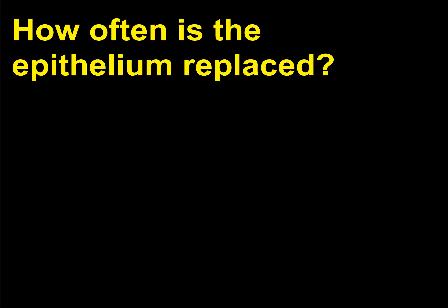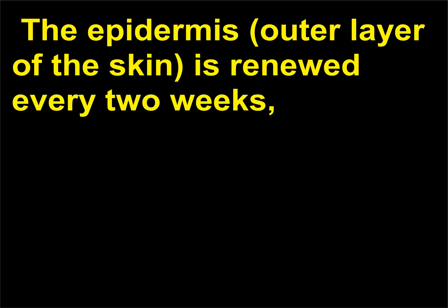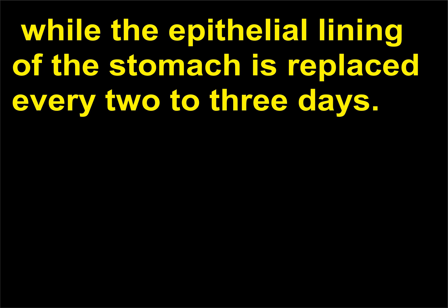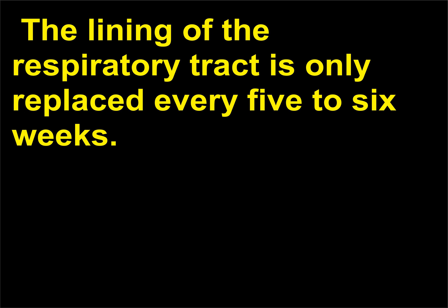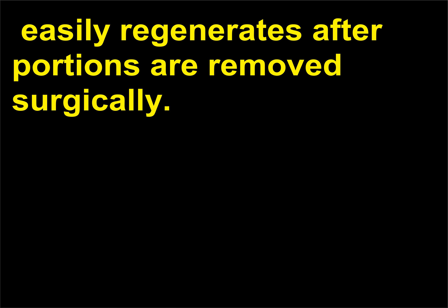How often is the epithelium replaced? Epithelial cells are constantly being replaced and regenerated during an individual's lifetime. The epidermis, outer layer of the skin, is renewed every two weeks. While the epithelial lining of the stomach is replaced every two to three days. The lining of the respiratory tract is only replaced every five to six weeks. The liver, a gland consisting of epithelial tissue, easily regenerates after portions are removed surgically.